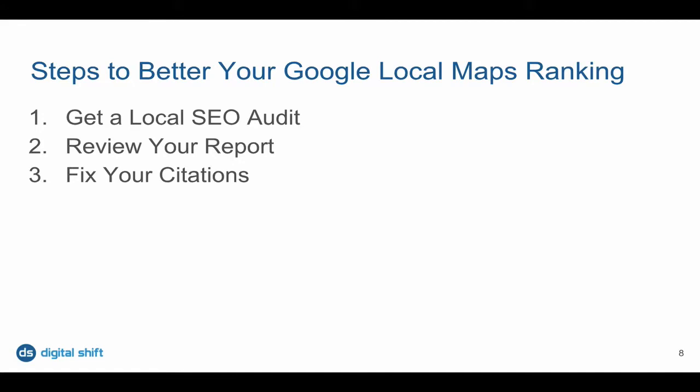Step number two is to review that local SEO audit to determine what accounts you have access to and what accounts you need access to, and also to review the different variations that Google has of your name, address, and phone number. Once you've reviewed and created a plan, the third and final step is going to be to fix all of your citations.